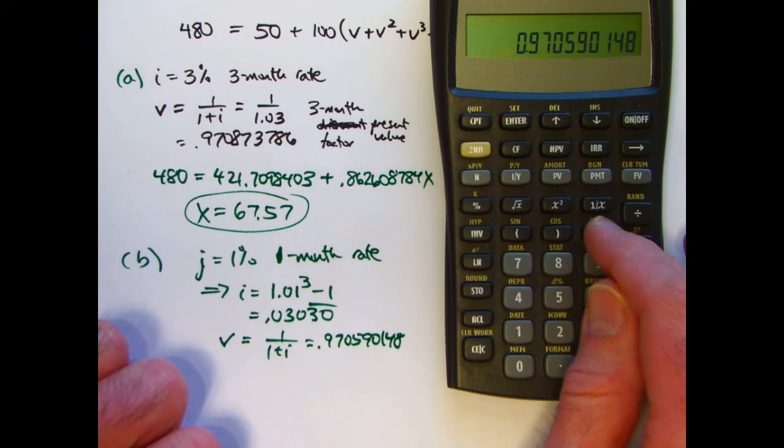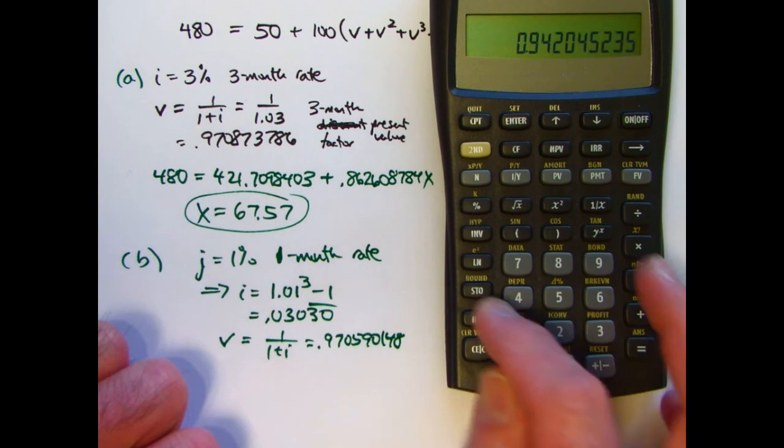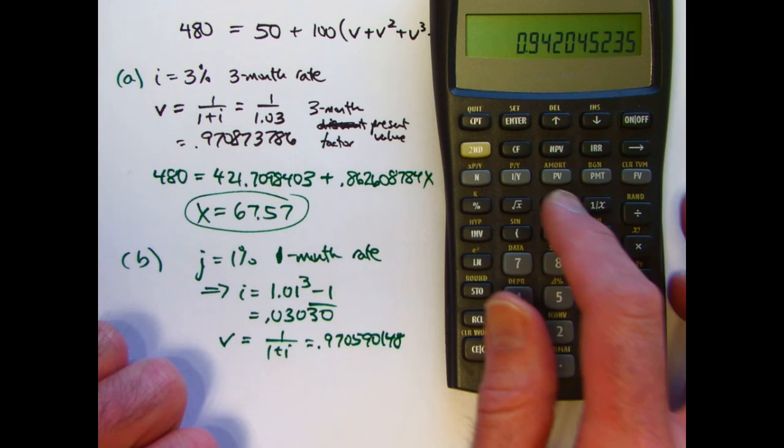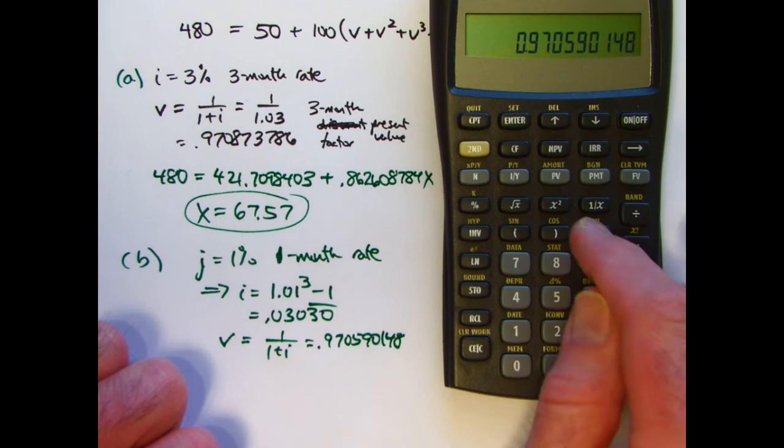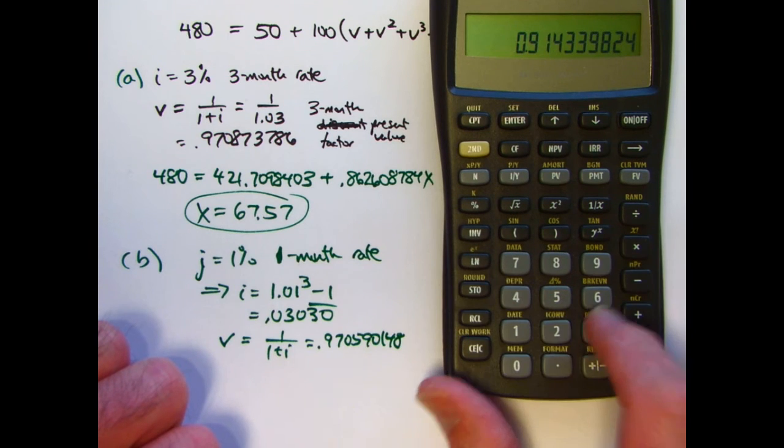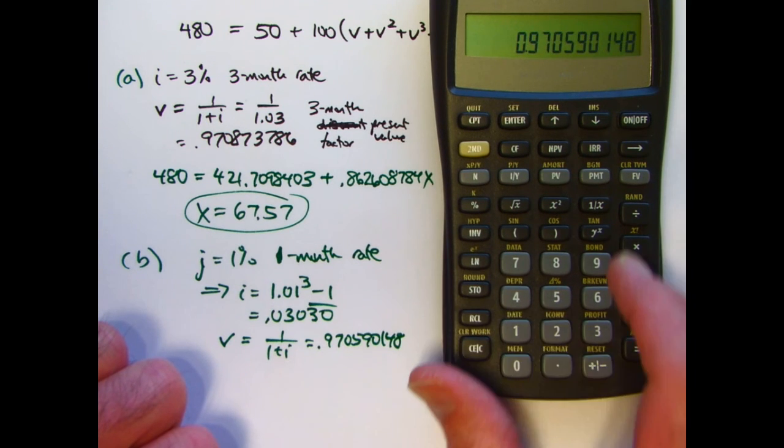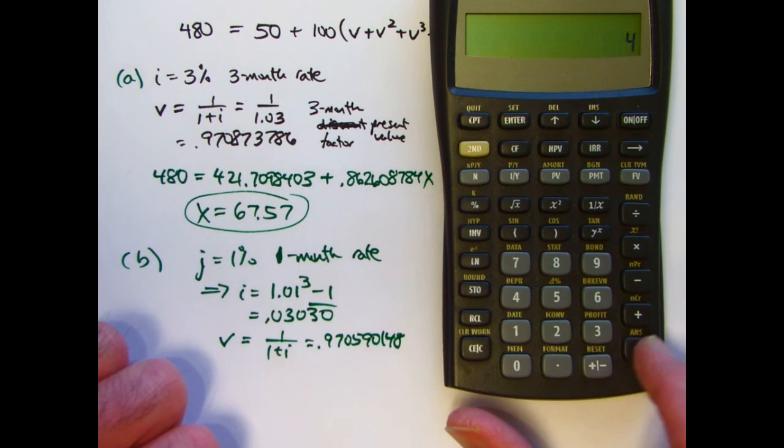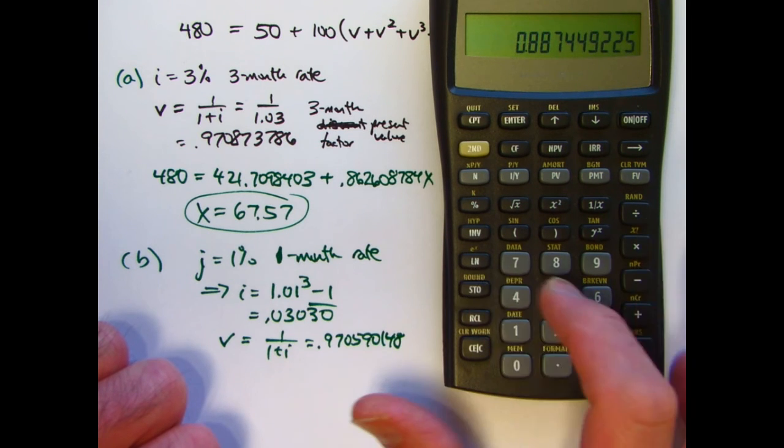I'm going to need to, just like before, I'm going to need to square it. Store that in register 2. I'm going to need to cube it. Store that in register 3. I'm going to need to raise it to the fourth power. Store that in register 4.